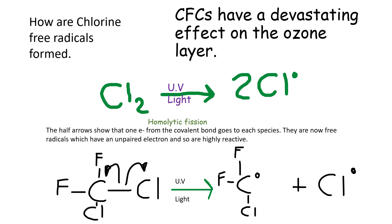These CFCs move via the wind and the natural mixing of air. It takes many years, but they move up into the upper regions of the atmosphere, where there is more ultraviolet radiation — less has been absorbed at that stage — and there's enough UV radiation up there to break the carbon-chlorine bond. There isn't enough radiation at ground level to break the carbon-chlorine bond, but there is in the upper regions. That forms the free radicals, which then attack the ozone layer.